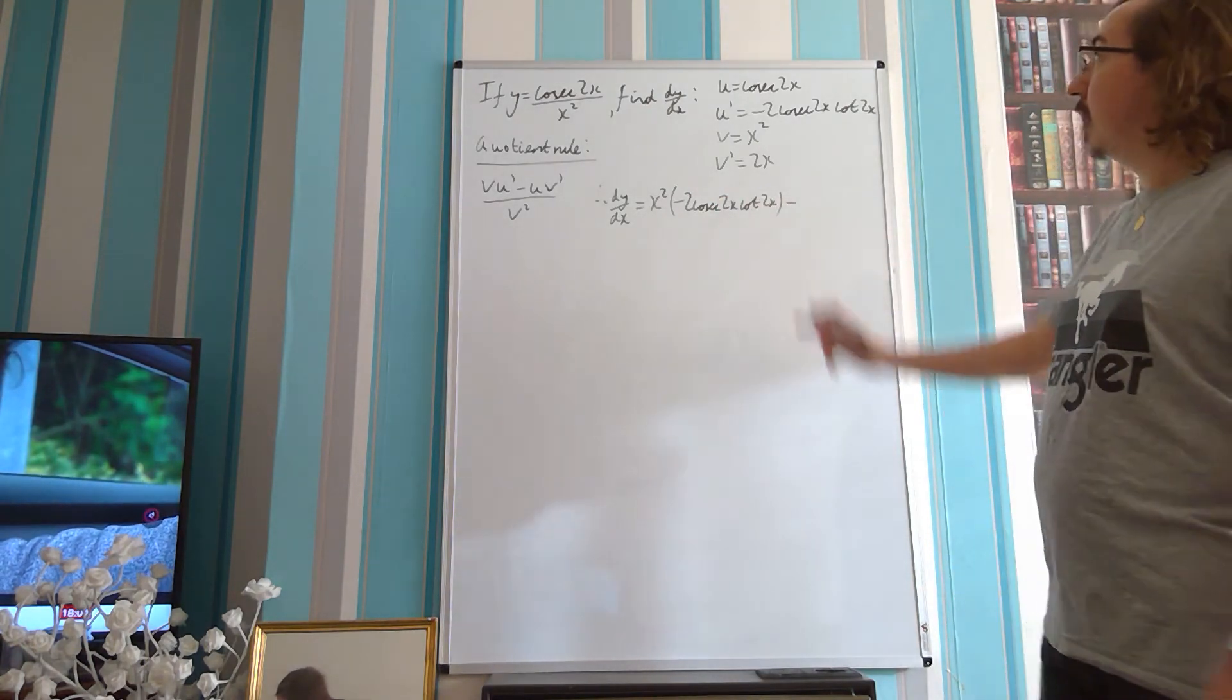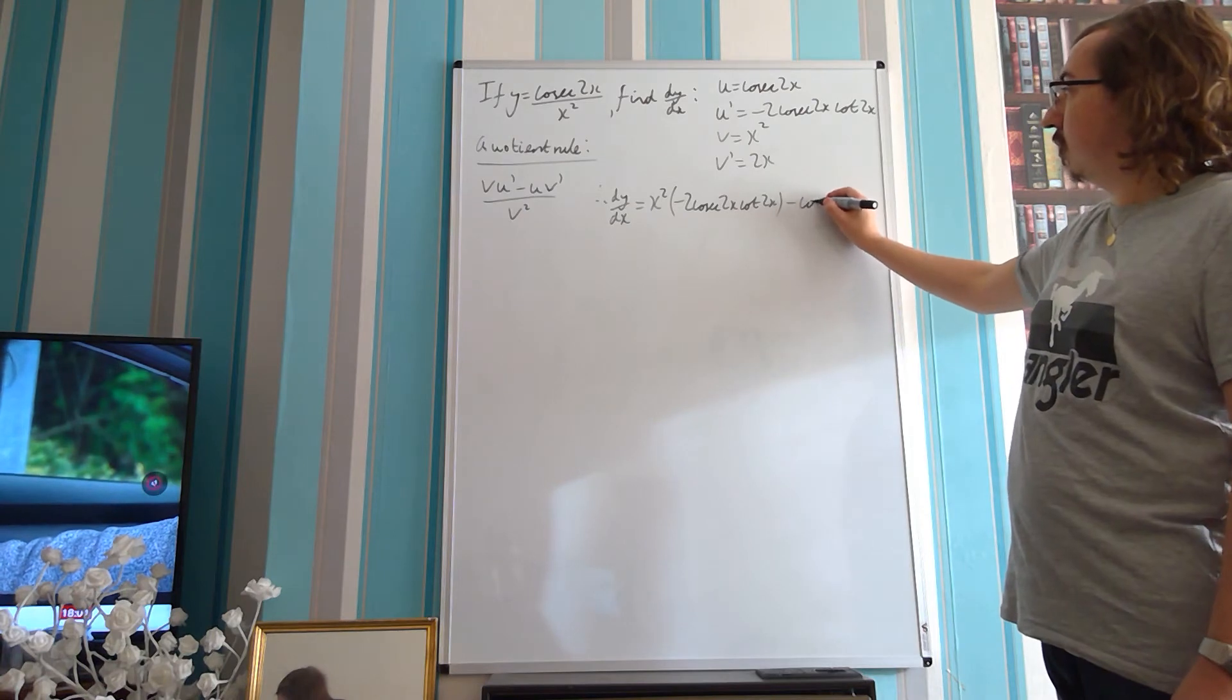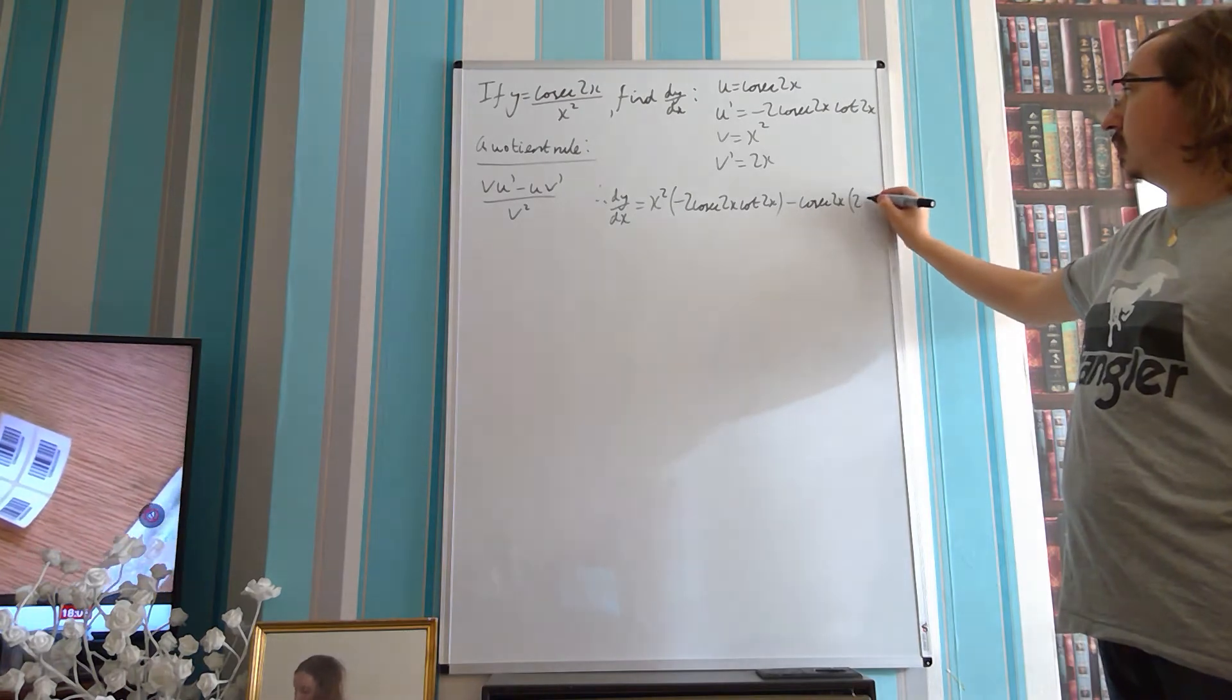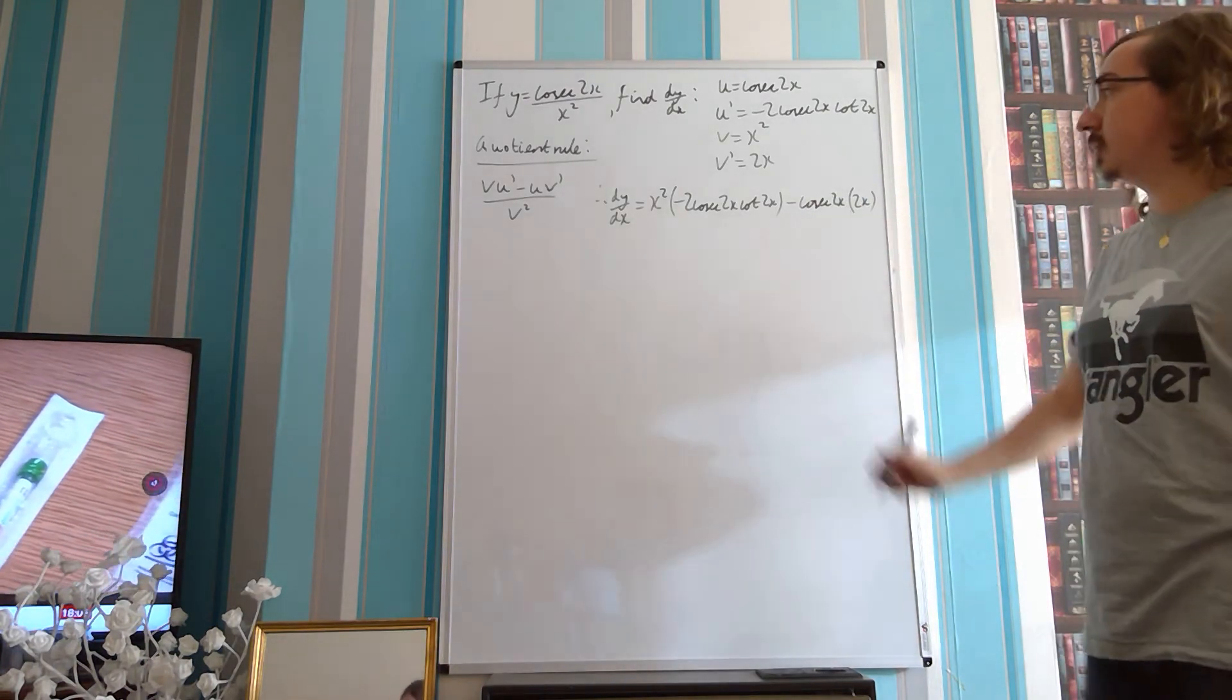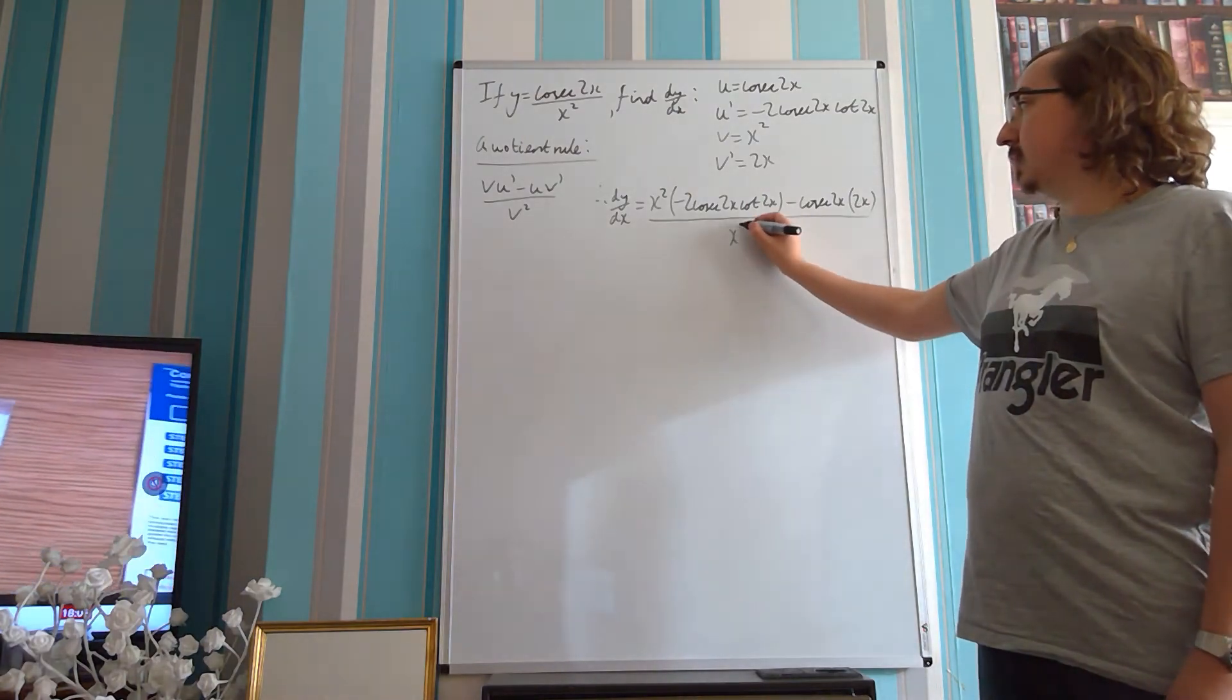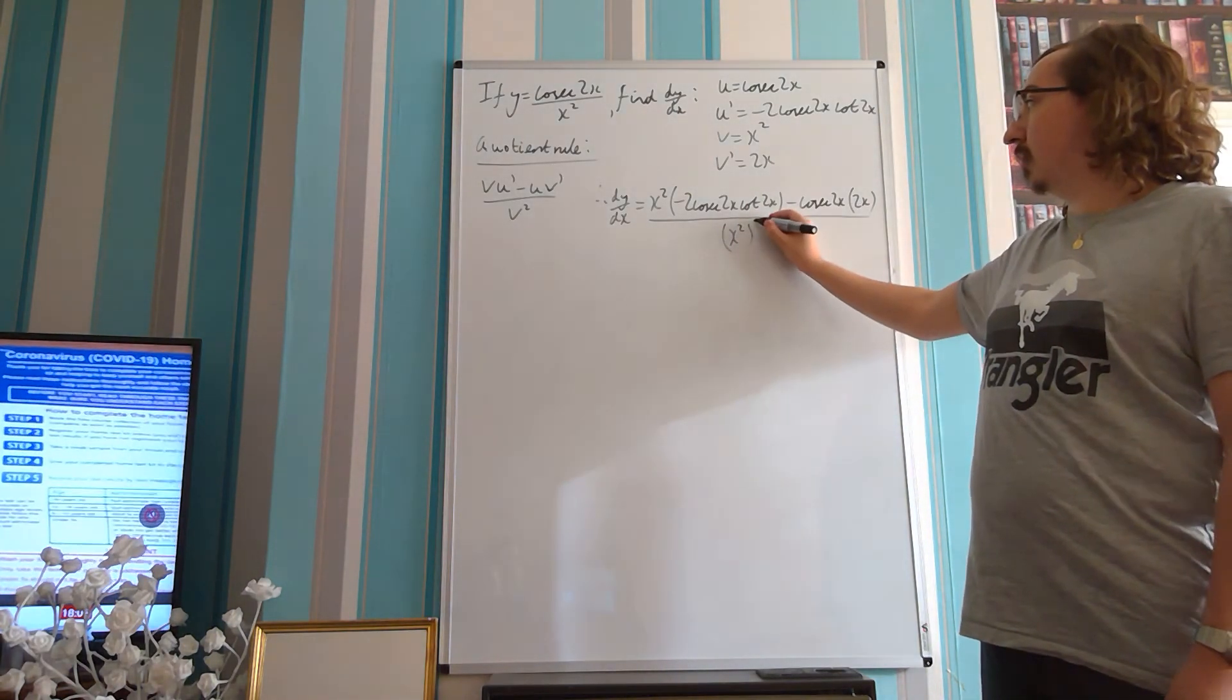minus in the middle, our u, which is cosec 2x, times our v dashed, which is 2x, all over our v, which is x squared, all squared.